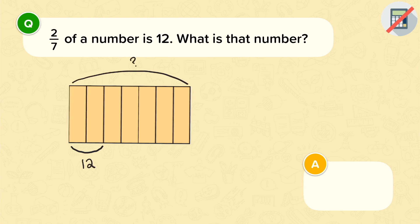Okay, so if 2 sevenths is equal to 12, then that tells me that 1 seventh is equal to 6. So the whole number will be 7 times 6, which is 42. So our original number was 42.